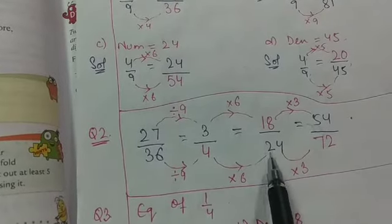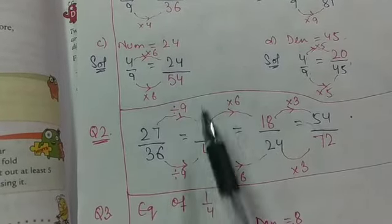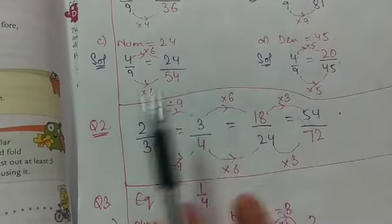Now here it is 24. So 4 into 6 is 24. That means 3 into 6 will be 18. Here it is clear.